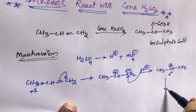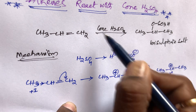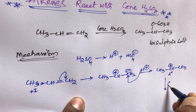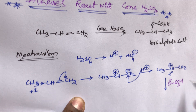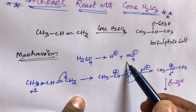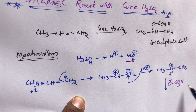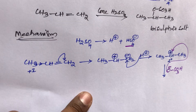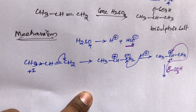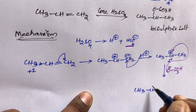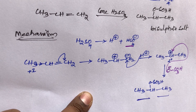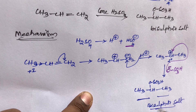After the carbocation forms, HSO₄⁻ acts as a nucleophile. The –O–SO₃H group attacks that position, and we get the final product CH₃–CH(OSO₃H)–CH₃, which is the bisulfate salt.